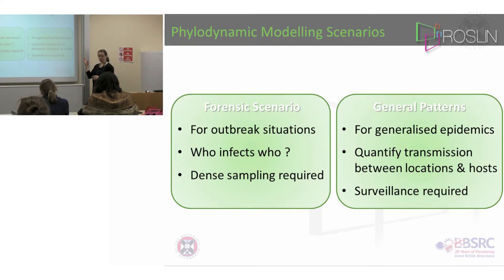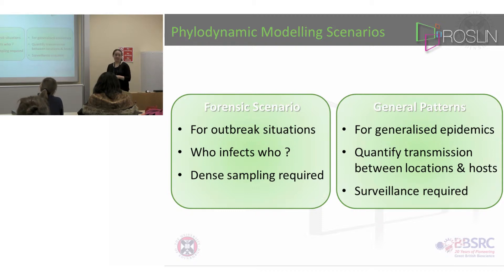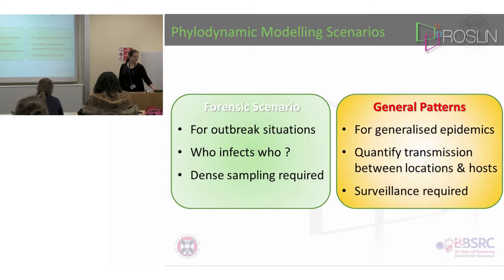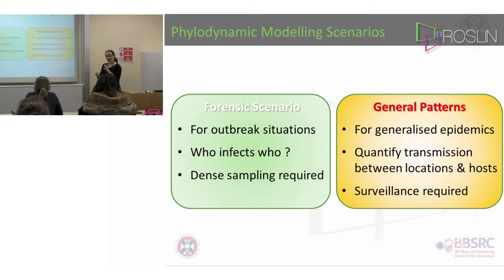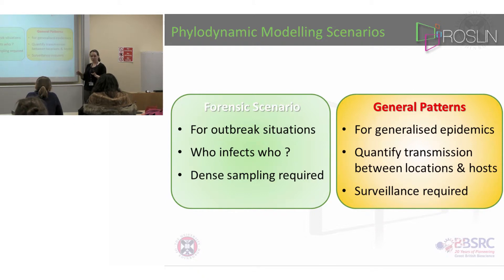However, there's another way you can use it as well. Instead of looking for exactly which individual infected which individual, you can look for generalised patterns. This is where you're trying to quantify the overall transmission rates between locations and between hosts. Here you don't need quite so dense sampling. This is more for the situation of general surveillance.